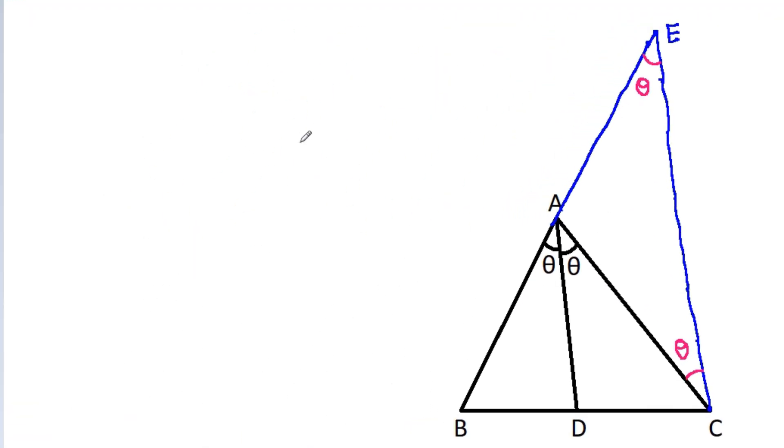And now, in triangle ACE, these two angles are equal. That means AE will be equal to AC.